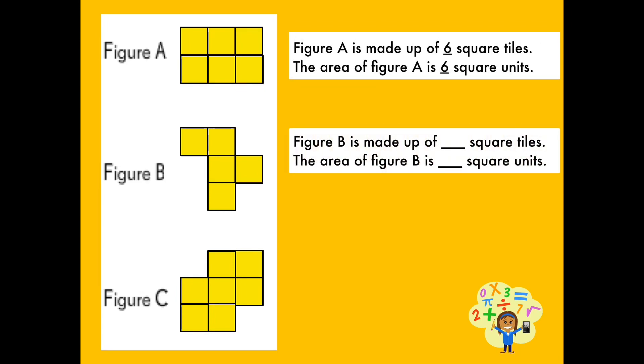How many pieces of square tiles make up figure B? Figure B is covered with five square tiles. We can say that the area of figure B is five square units.